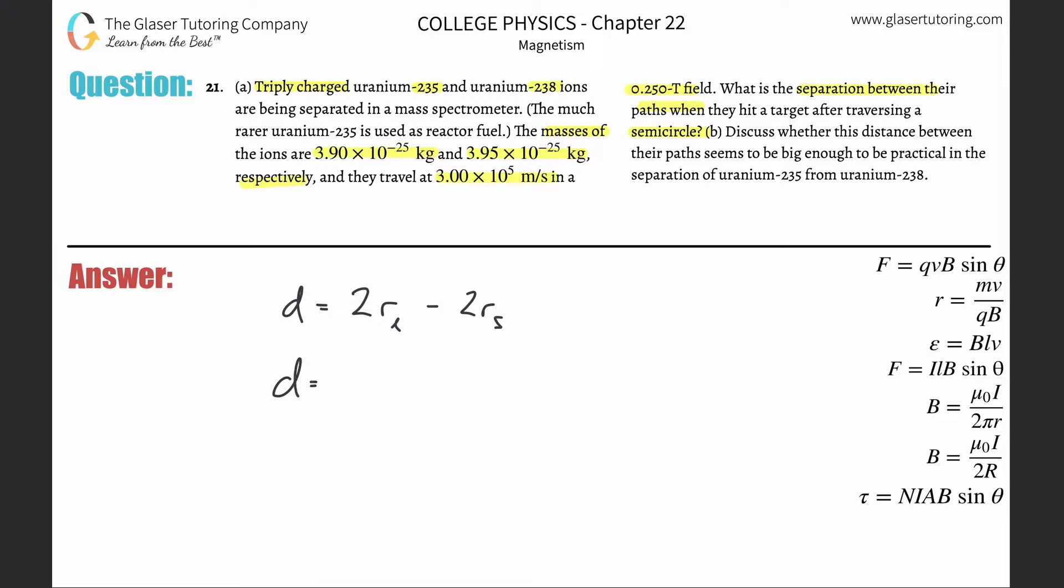In terms of mass, the larger one is going to be 238. The radius is going to be - I'm going to use the formula over here for radius of a charged particle in a magnetic field - that's going to be the mass of the larger times the velocity of the larger divided by the charge of the larger times the magnetic field, minus then two times the mass of the smaller times the velocity of the smaller divided by the charge of the smaller times the magnetic field.